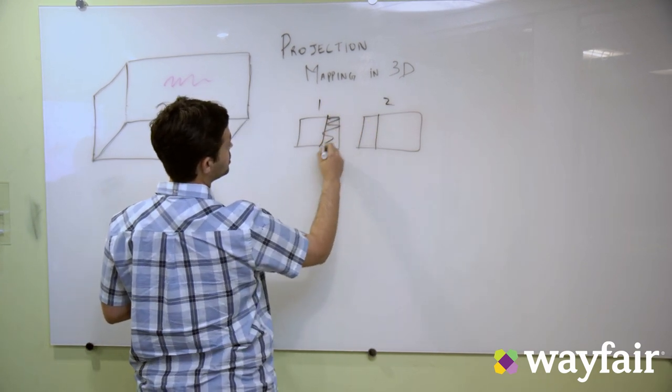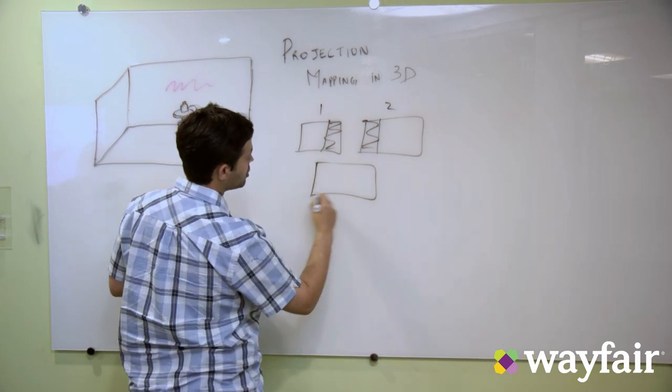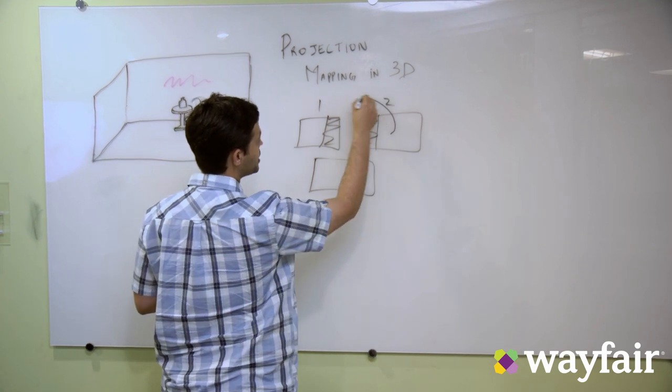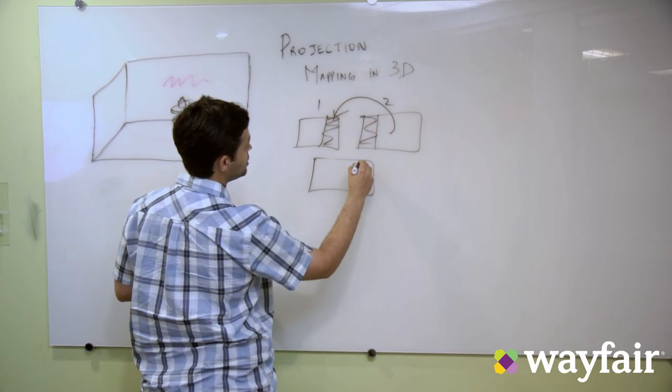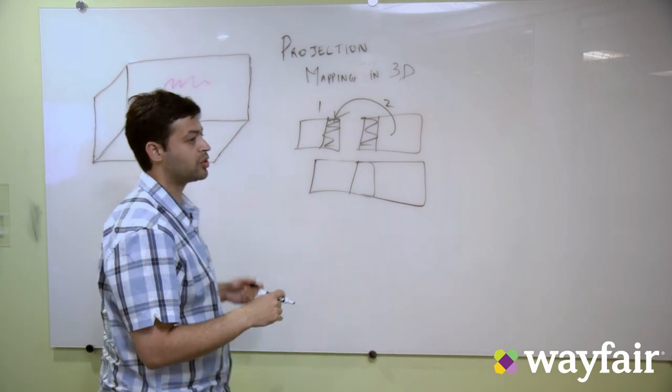Suppose these are the overlapping areas, so what you do is overlay this image onto this and stitch them together. There you go, you have your own panorama.